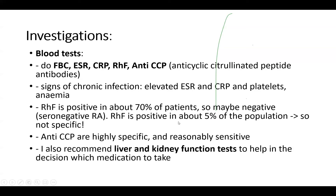Consider that if the patient has typical symptoms but is negative, it's called seronegative rheumatoid arthritis. But also the opposite may be true: the rheumatoid factor is positive in about 5% of the normal population, so it's not specific for the disease. It is positive in a high proportion of pregnant women and the elderly, so just having a positive rheumatoid factor does not mean the patient has rheumatoid arthritis.